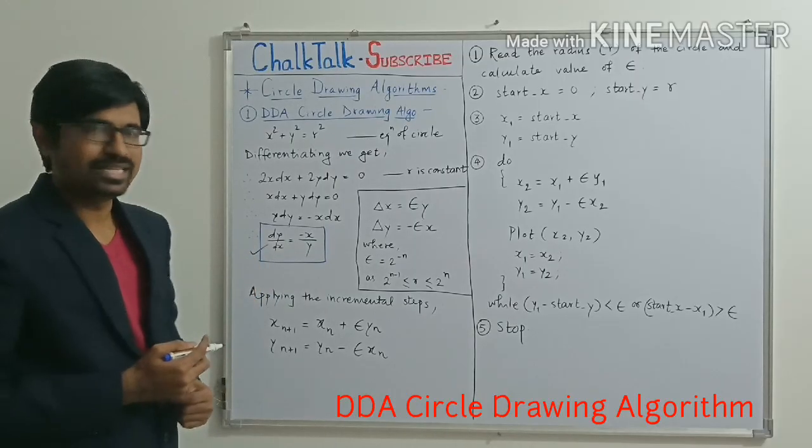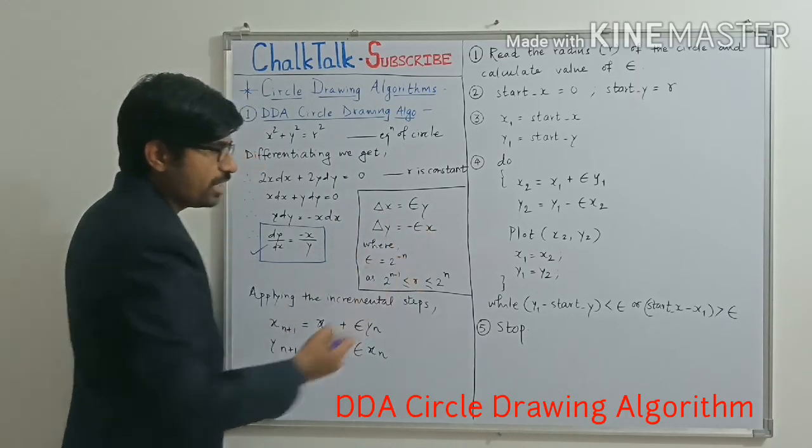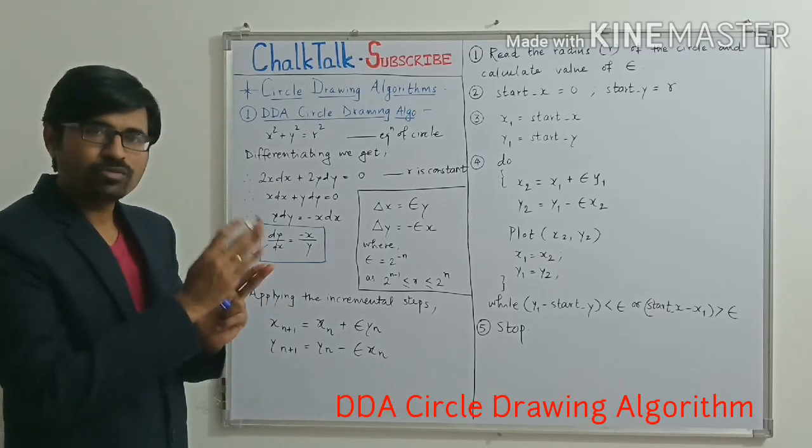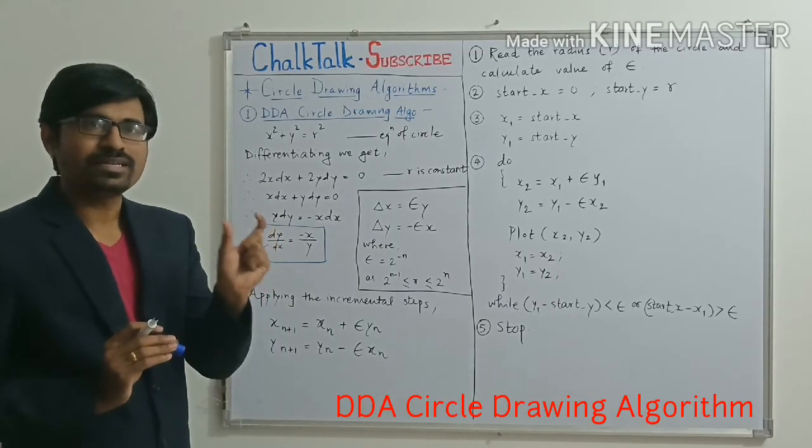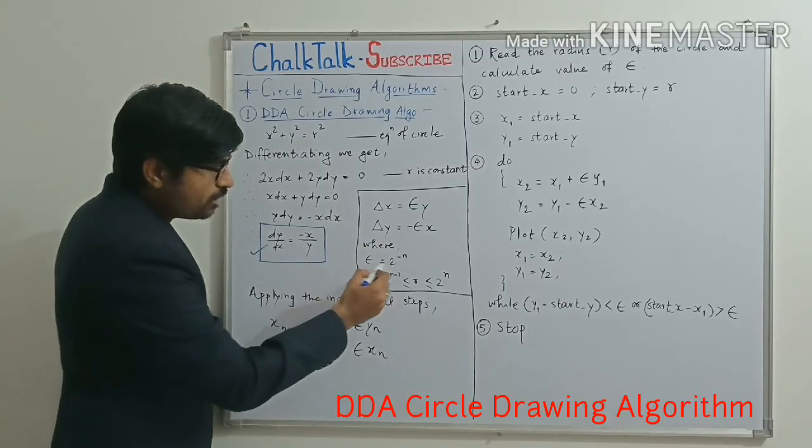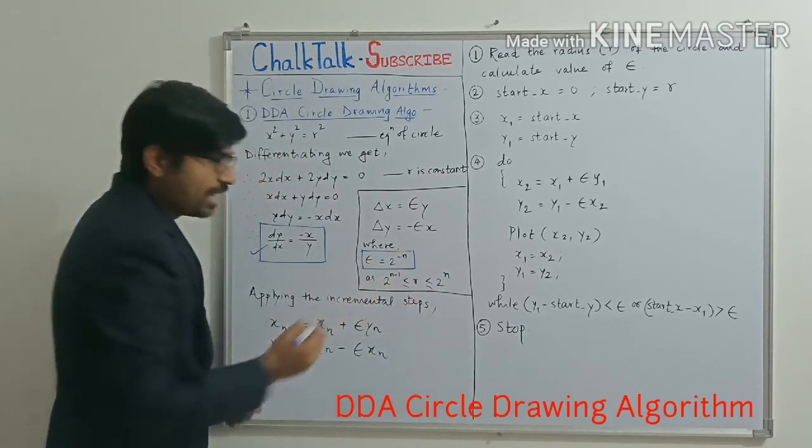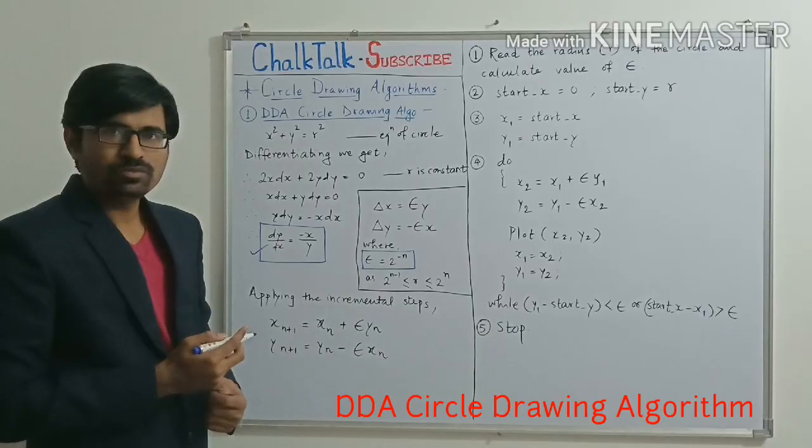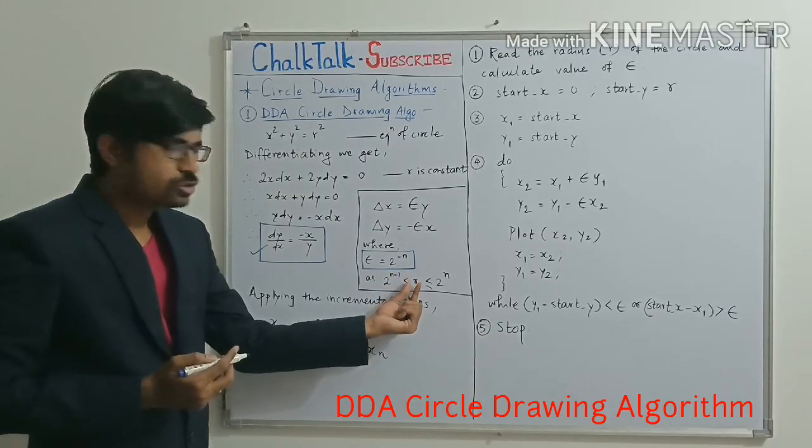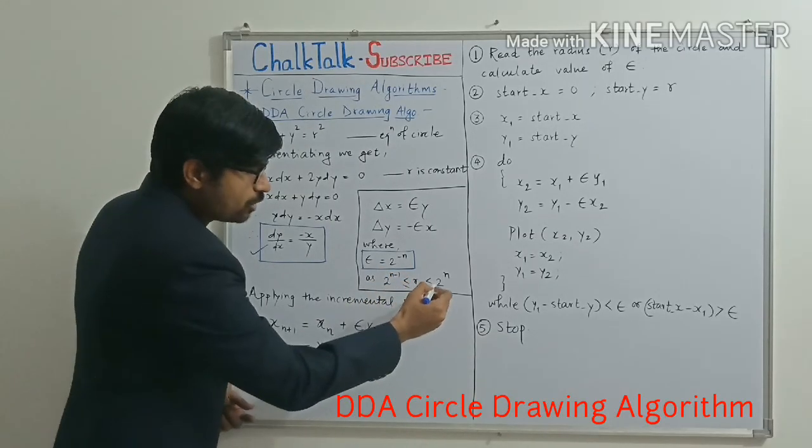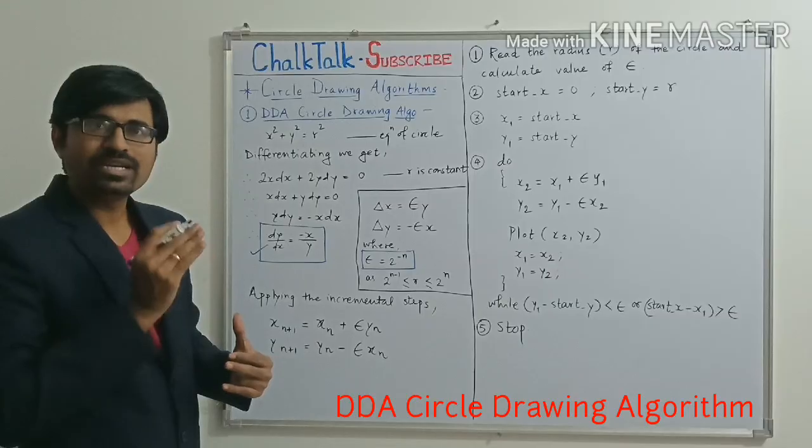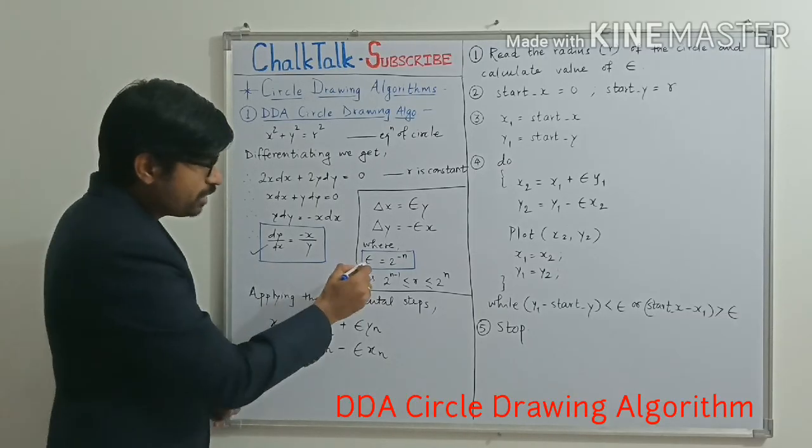Now when I talk about epsilon y and epsilon x, you might be thinking what is epsilon. So epsilon is nothing but the incremental factor which will help us moving from one pixel to another pixel. And this incremental factor needs to be calculated. Now to calculate this incremental factor epsilon, we have the formula that epsilon = 2^(-n). And this 2^(-n) we have to assume with the help of value of r. With the help of this equation, 2^(n-1) ≤ r ≤ 2^n, where r is nothing but the radius. So you have to set in such a manner, depending upon the value of r, you will be calculating the value of n. And with the value of n, you will be calculating the value of epsilon.